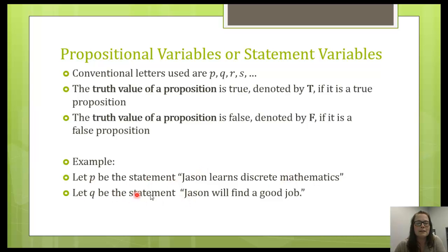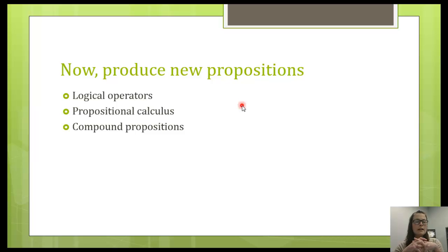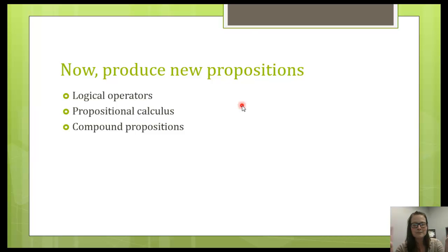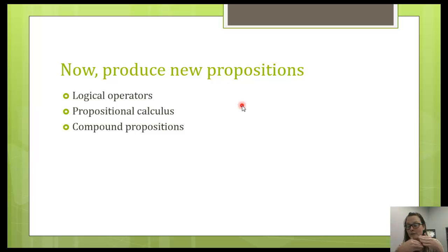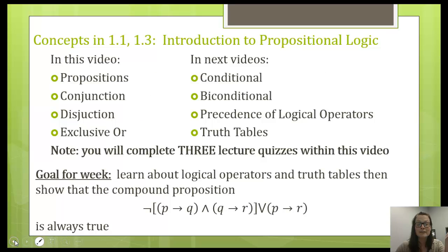We're going to talk about Jason and him learning discrete mathematics and finding a good job — taking propositions and joining them together with operators. We're going to do something called propositional calculus, which sounds really cool — you can tell your friends you're doing that. But really, we're just symbolically manipulating and learning about these operators. We'll be taking those variables P, Q, R, S and joining them with operators: and, or, exclusive or, implication. And building these new big propositions, like that compound proposition I showed you at the very beginning.